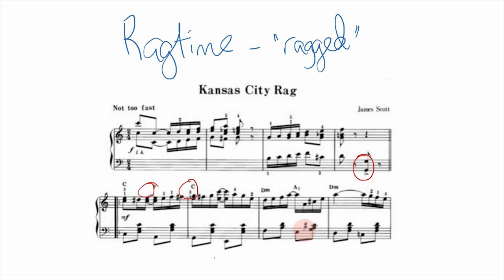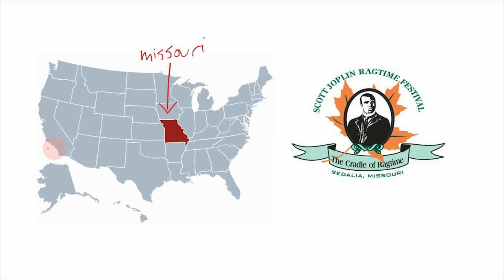Ragtime is also generally pretty hard to play. Anyone who's attempted to play Scott Joplin's Maple Leaf Rag knows it's really tough. The idea is to play with this machine-like precision, but there are a lot of big leaps and octaves that make it extremely difficult to do that.